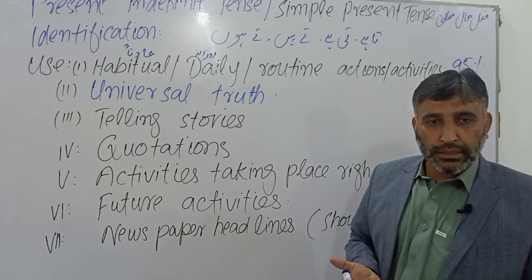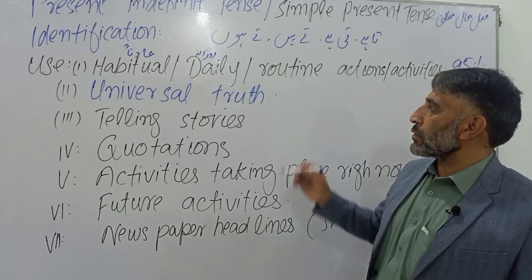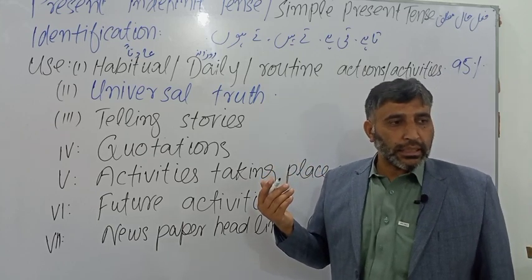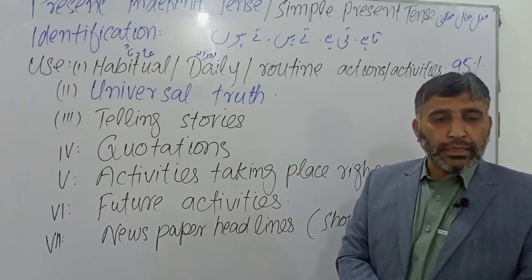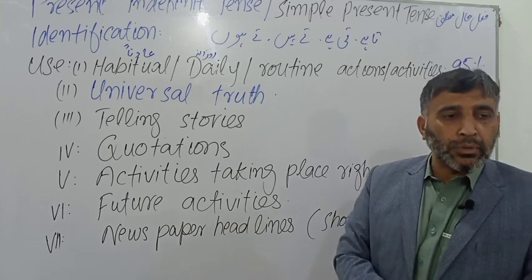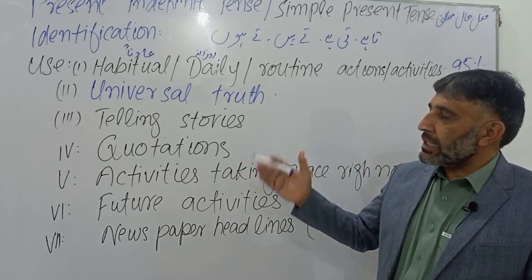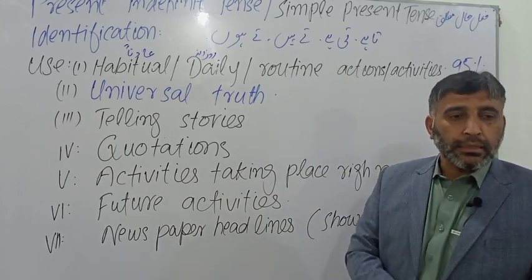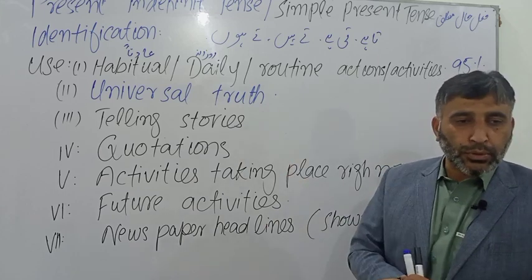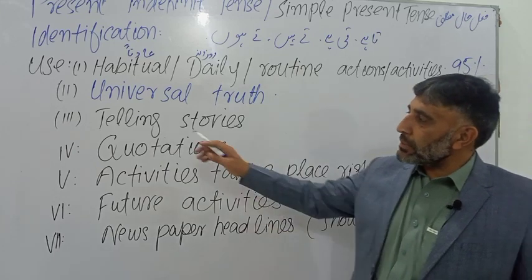The second use of this tense is for universal truth — 'baynul aqwami haqqiqat' or universal facts. For example: 'Allah is one', 'The earth revolves around the sun', 'The sun rises in the east'. These are universal truths, and for universal truth we also use the present independent tense.